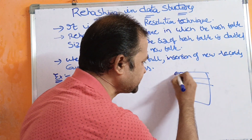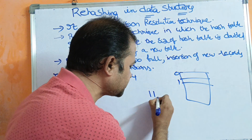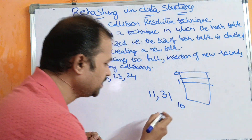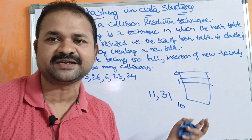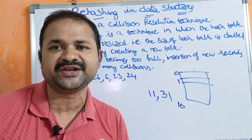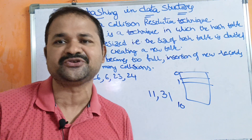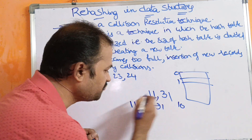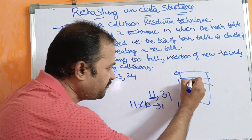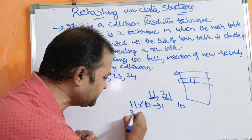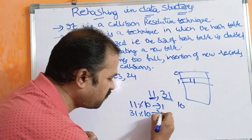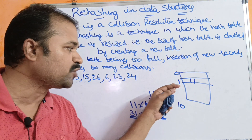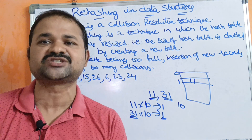Let us say we have a hash table and two records: 11 and 31. Let the size of the table be 10, and we are using the division method, meaning key modulo 10. So, 11 modulo 10 equals 1, so we store 11 at location 1. Next, 31 modulo 10 also equals 1, so we need to store 31 at location 1, but location 1 already contains 11. This situation is called a collision.